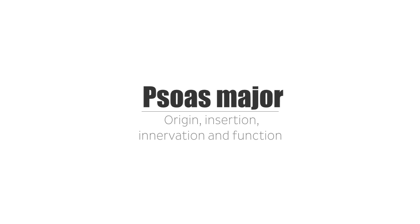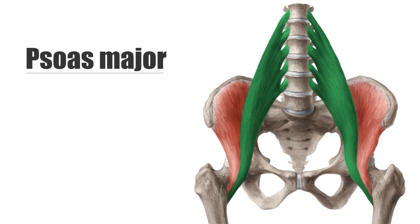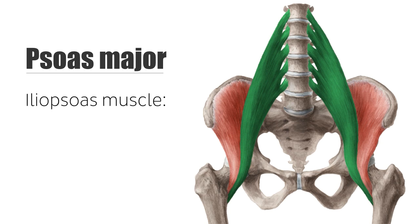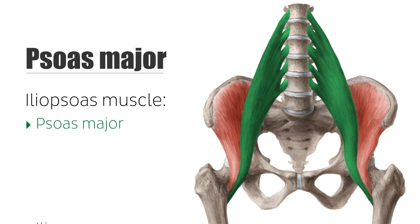The psoas major muscle is part of a team of two muscles that compose the iliopsoas muscle. The iliopsoas muscle belongs to the inner hip muscles and is made up of the psoas major and the iliacus muscles.